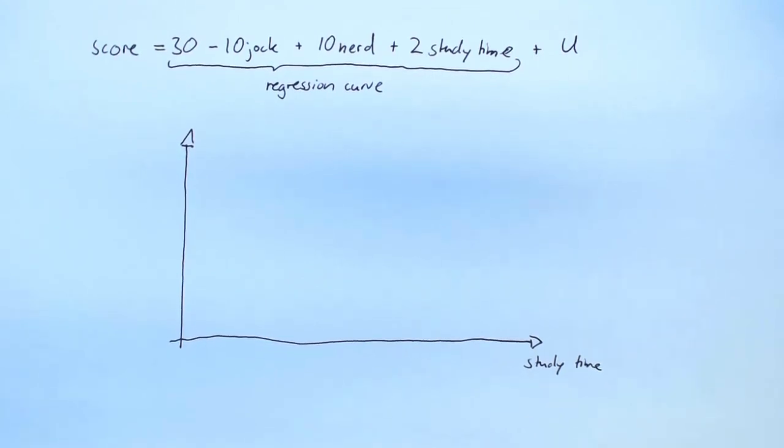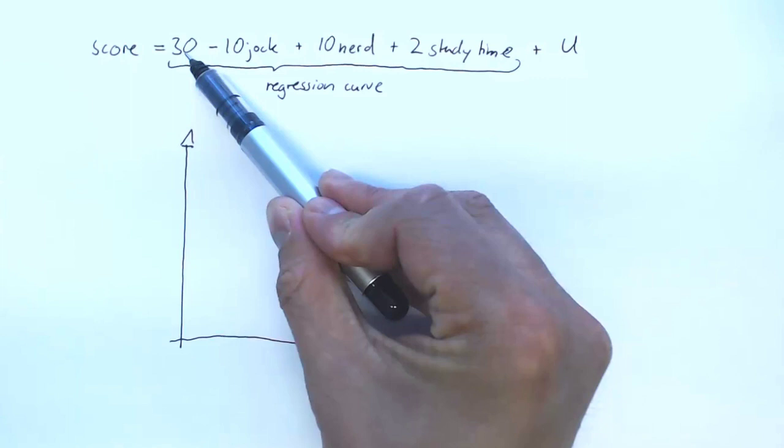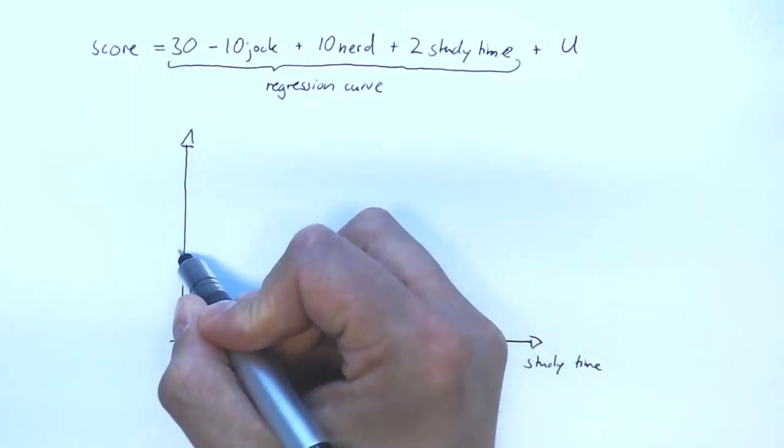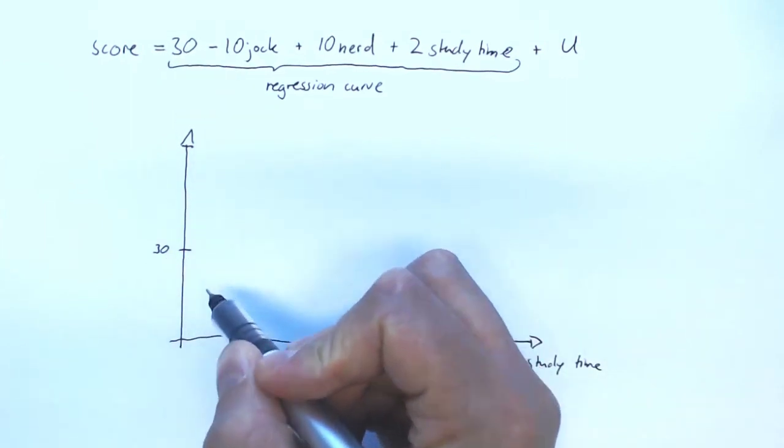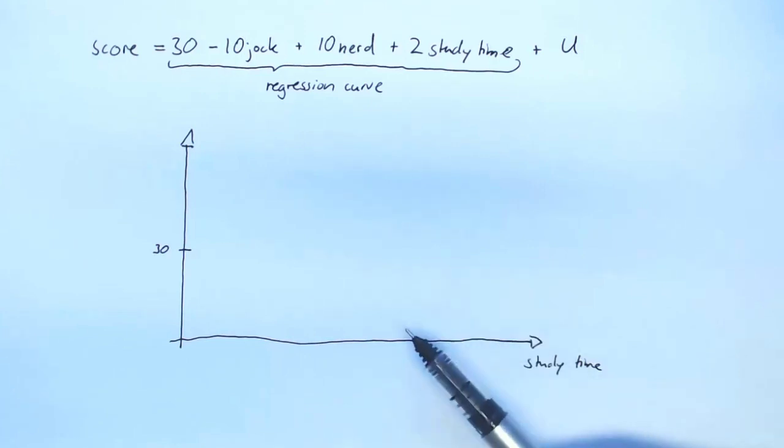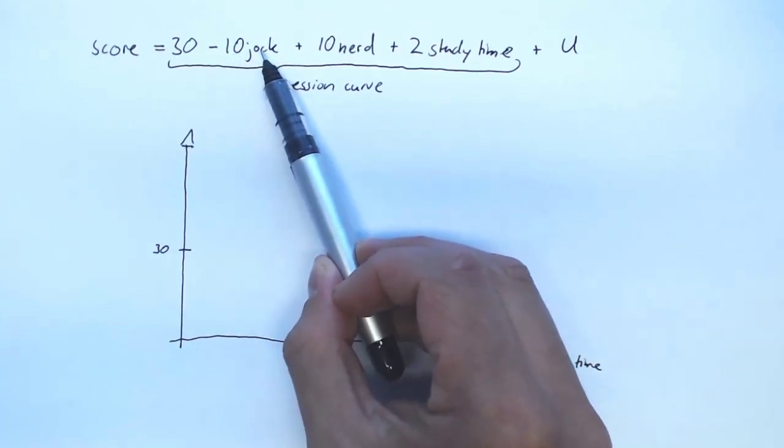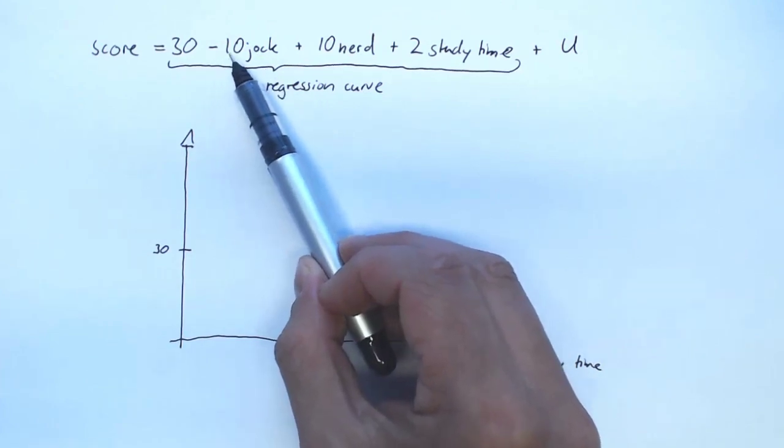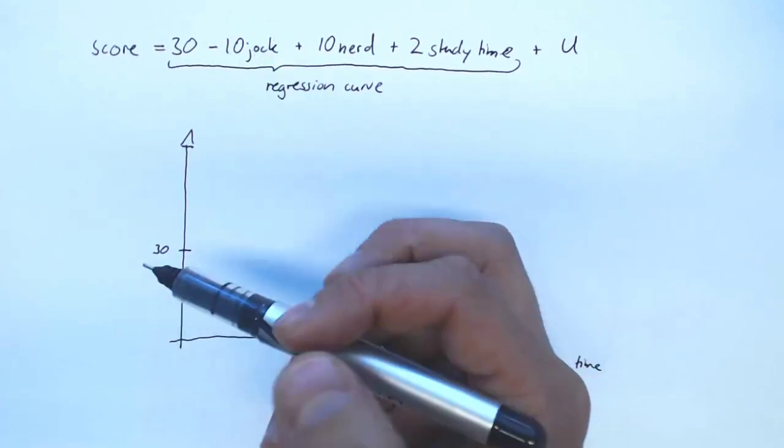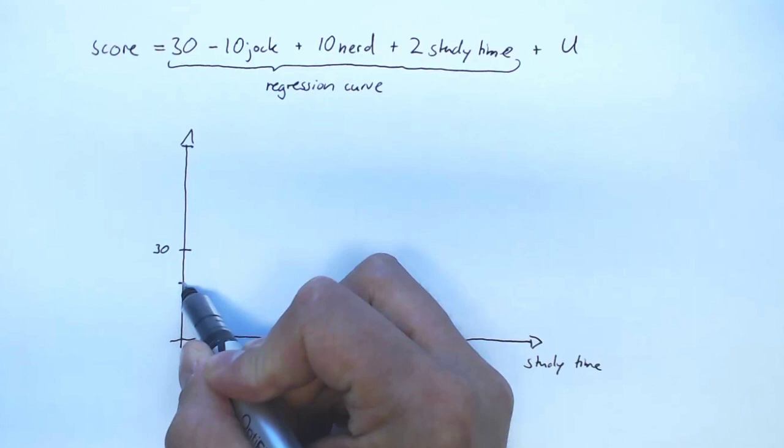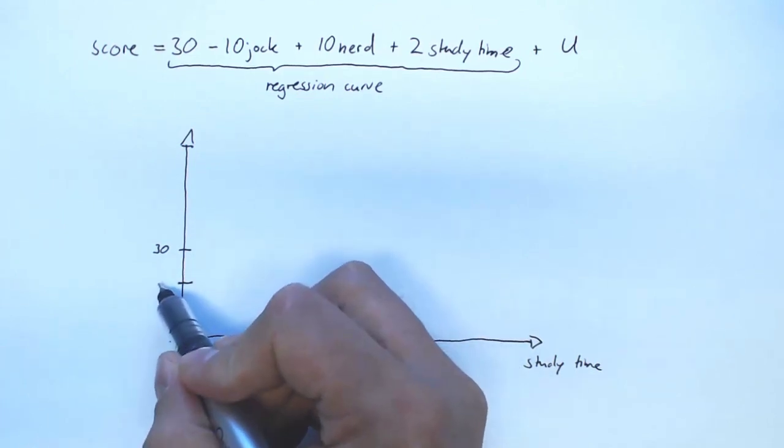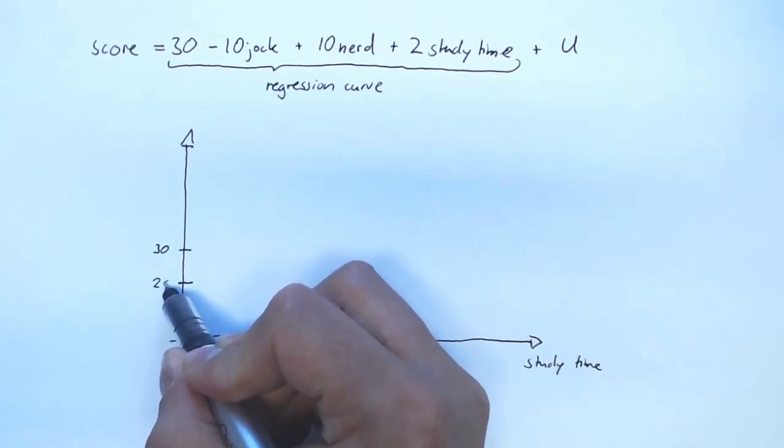Let's start with jocks. If you're a jock, you get basically the intercept 30 for free. Then you get minus 10 times, now you're a jock so this will be a 1 for you. You get minus 10, so you're at 20.